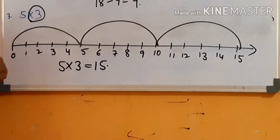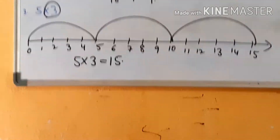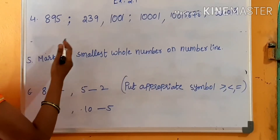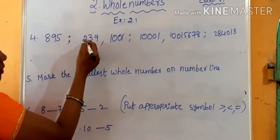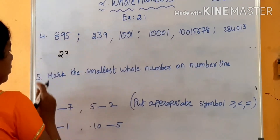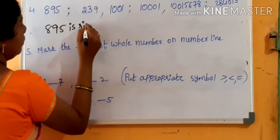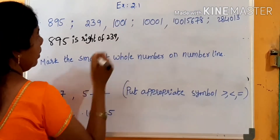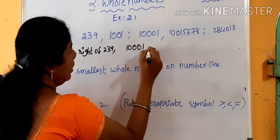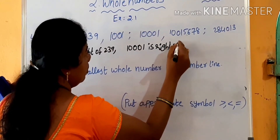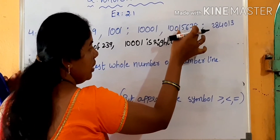Do you understand how to add, subtract, and multiply using the number line? Next: in each pair of whole numbers, which number comes to the right of the other? Here 895 comes after 239, so 895 is to the right of 239, and 895 is the greater one. Similarly, 100001 is to the right of the other number, and it is the greatest one.